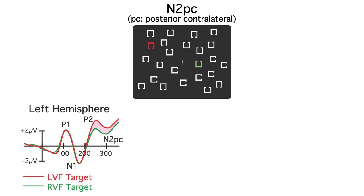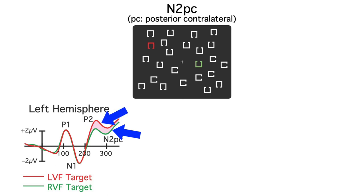If we look over the left hemisphere, we see that the P1 and N1 components are the same whether the target is in the left visual field or the right visual field. P1 and N1 are only impacted by attention when attention is focused on the location of the target before the stimulus array appears. Once the stimuli appear, it takes about 200 milliseconds for attention to shift to the target, and then we'll see the N2PC as a negative-going wave over the contralateral hemisphere. For the left hemisphere, that means we see a more negative voltage from about 200 to 300 milliseconds when the target is on the right side than when it's on the left side.